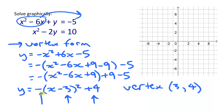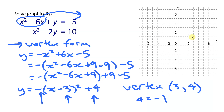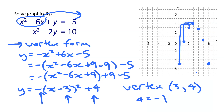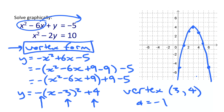The a value of -1 means the parabola opens downward, and since |a| = 1 the shape is the standard parabola. To graph it, find vertex (3, 4), note it opens down, and apply the pattern 1→1, 2→4, 3→9 on both sides. Draw a smooth curve through those points.